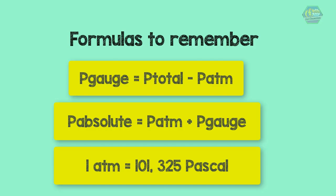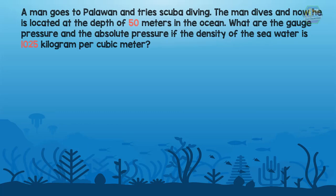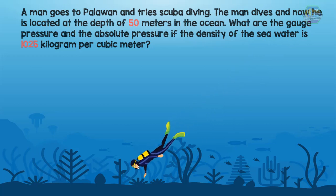Now try to answer this problem on your own — pause the video and try it, then let's see if we get the same answer. A man goes to Palawan and tries scuba diving. He dives to a depth of 50 meters in the ocean. What are the gauge pressure and absolute pressure if the density of the sea water is 1,025 kilograms per cubic meter?